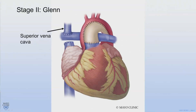Stage two is also called the Glen. In this case, the shunt is taken down and the superior vena cava, which drains blood from the upper body, is connected to the pulmonary arteries, providing the lungs with blood flow. This is a much more stable circulation, but we can't do this as a newborn because the resistance in the lungs is too high. After the Glen, there is less volume that the heart has to handle. You will notice that the blood returning from the lower body still returns directly to the heart and goes out the aorta. The Glen is performed from three to six months of age and is a lower risk procedure with a much more rapid recovery. The patient will have saturations that are still lower than normal babies because of the blue blood from the lower body going out the aorta.